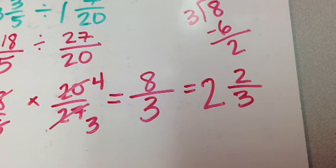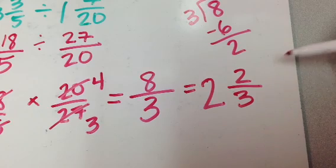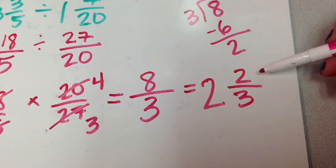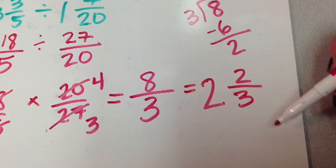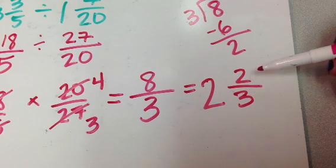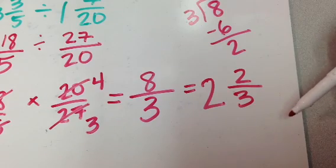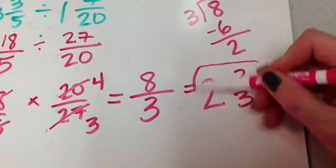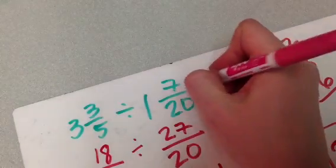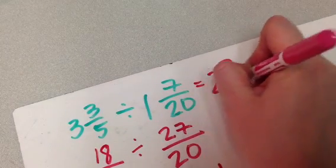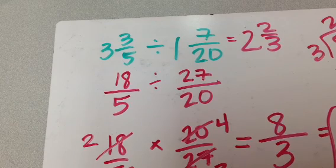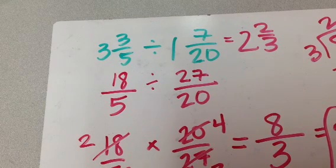Question 2, is that reduced down as far as it can go? And yes, it is, and I know that because if I'm counting, 1, 2, 3, 4, 5, 6, 7, right? 2 and 3 are right next to each other when I'm counting, so that means that their only common factor is going to be 1, and I'm reduced down as far as I can go. So, I'm going to come back up here, equals 2 and 2 thirds. 3 and 3 fifths divided by 1 and 7 20ths equals 2 and 2 thirds.